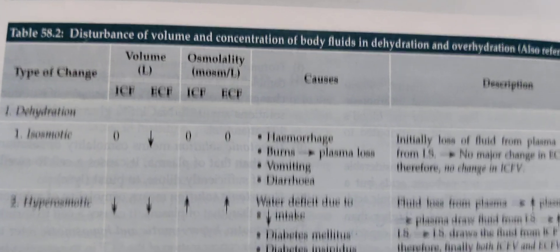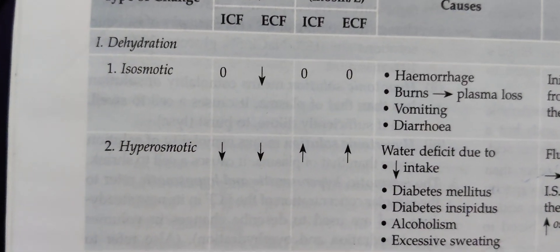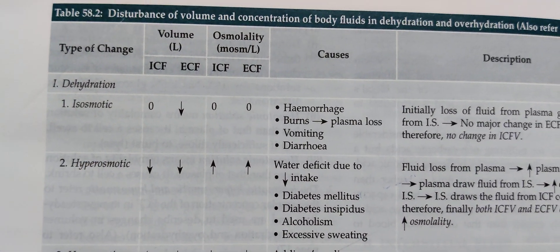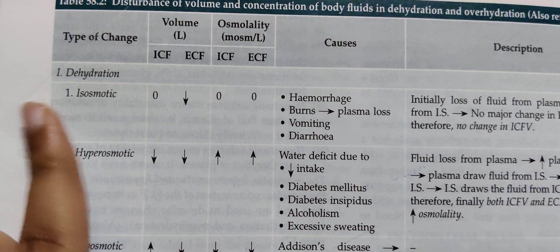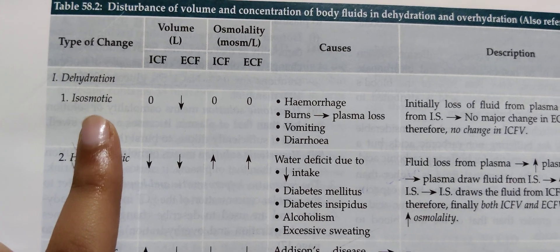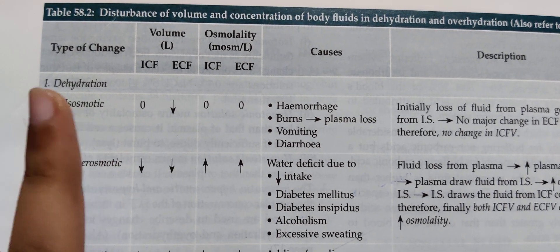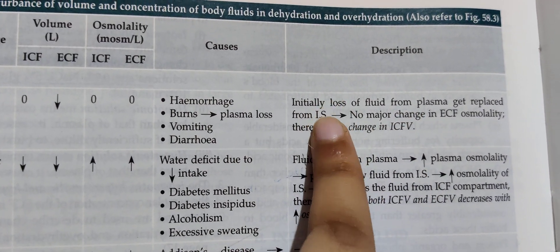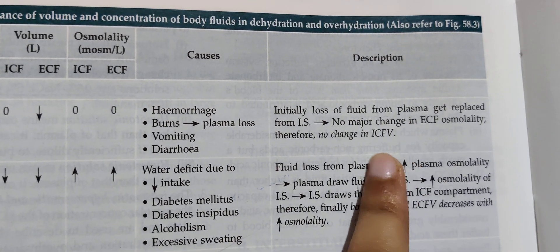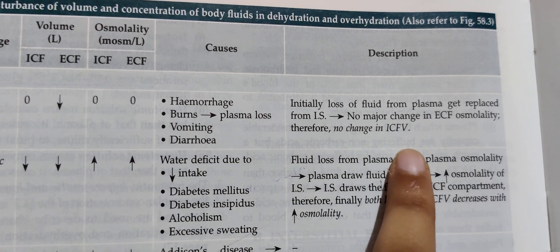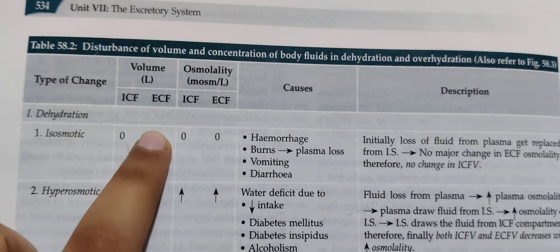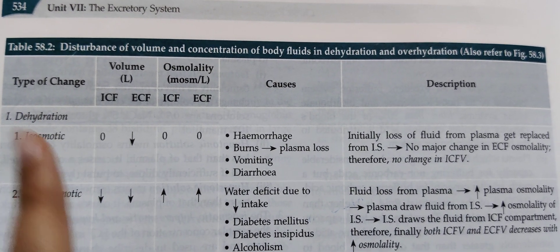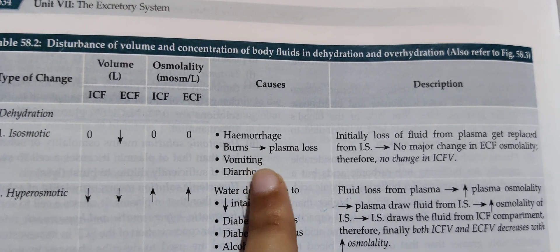Now let's look at various types of dehydration and overhydration. In iso-osmotic dehydration, iso-osmotic fluid is lost from ECF. The loss is initially replaced from the interstitial fluid, so there is no major change in ECF osmolality and no change in ICF volume — only ECF volume decreases. This occurs in hemorrhage, burns, vomiting, and diarrhea.